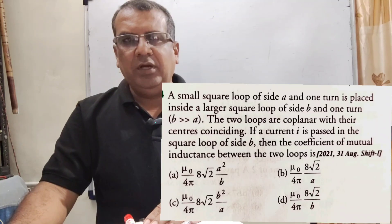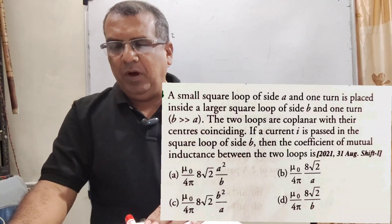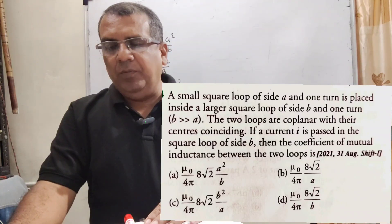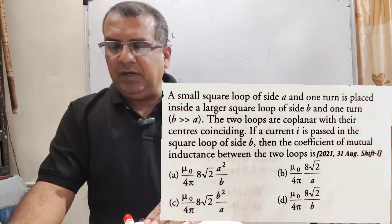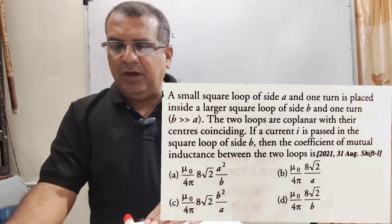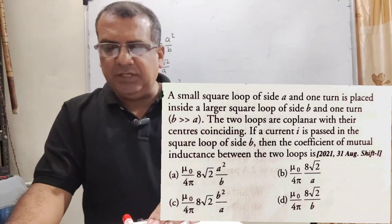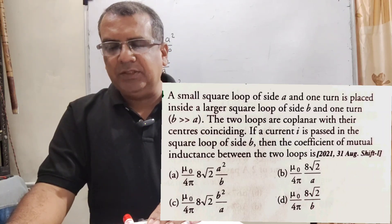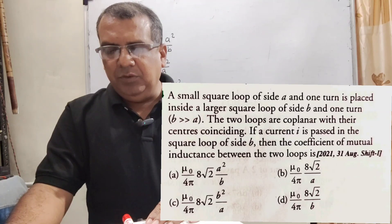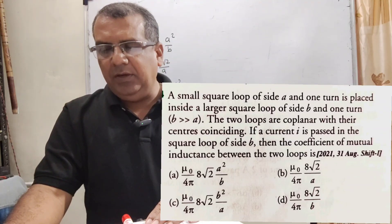Now, here is the question. A small square loop of side A and one turn is placed inside a larger square loop of side B and one turn where B is greater than A. The two loops are coplanar with their centers coinciding. If a current I is passed in the square loop of side B, then the coefficient of mutual induction between the two loops is, here we have given four options. Options are A: μ₀/4π A√2 A²/B. Option B: μ₀/4π A√2/A. Option C: μ₀/4π A√2 B²/A. And option D: μ₀/4π A√2/B.